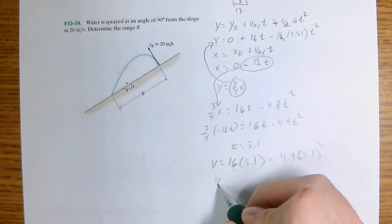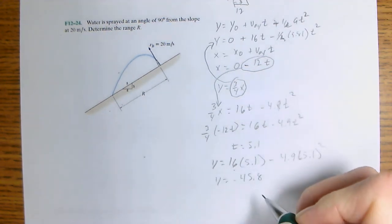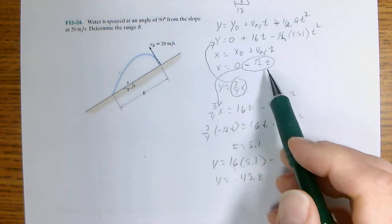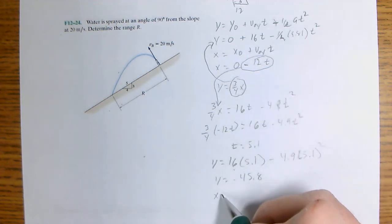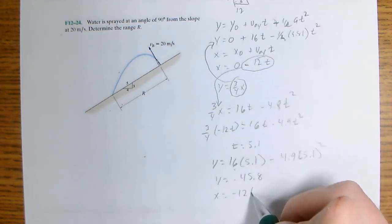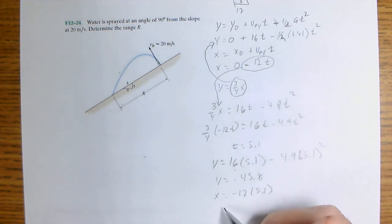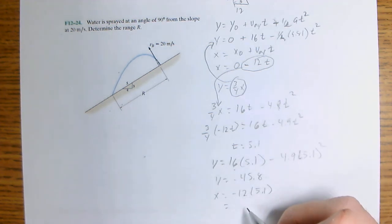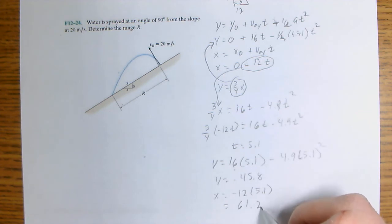So Y equals negative 45.8. And putting it in for X, X equals negative 12 times 5.1, so that equals negative 61.2.